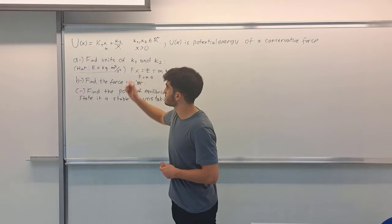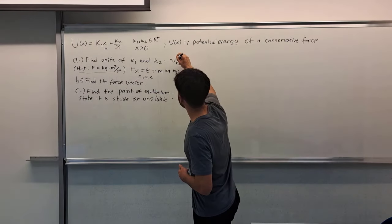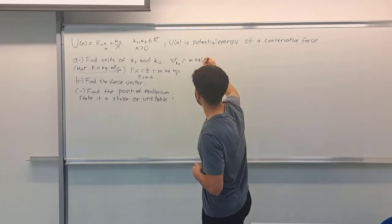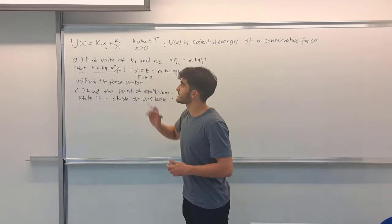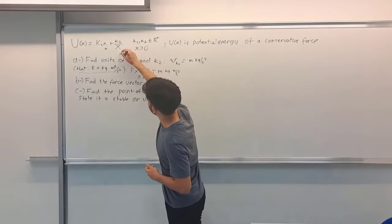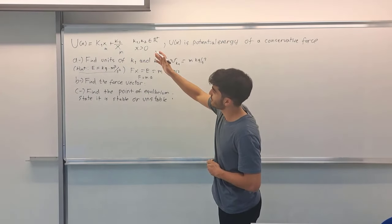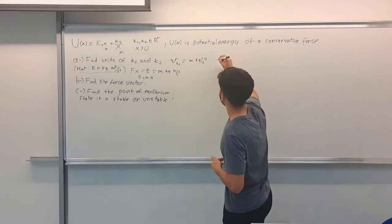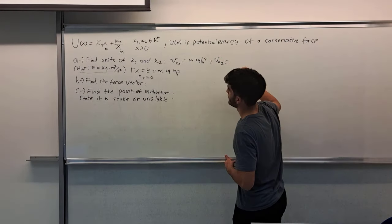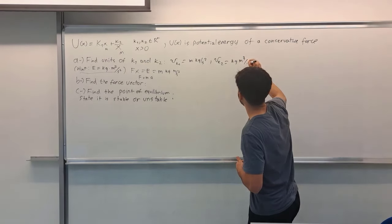Therefore the unit of k1 equals meter times kilogram per second squared. And for k2 over x is here, so we should give an additional meter for the original energy unit system to k2. Therefore the unit of k2 equals kilogram times meter cubed per second squared.